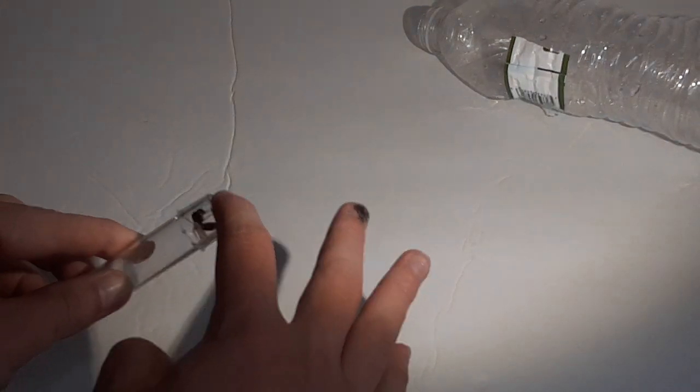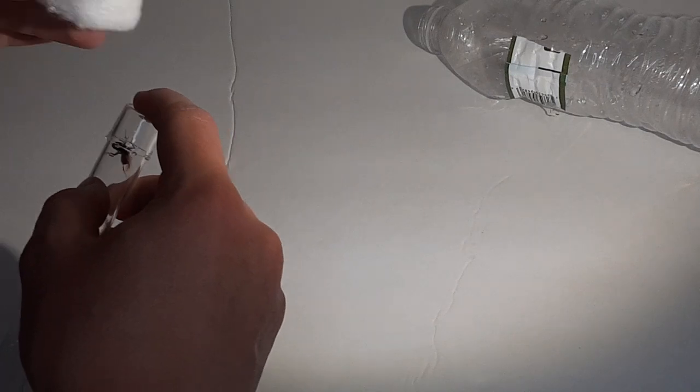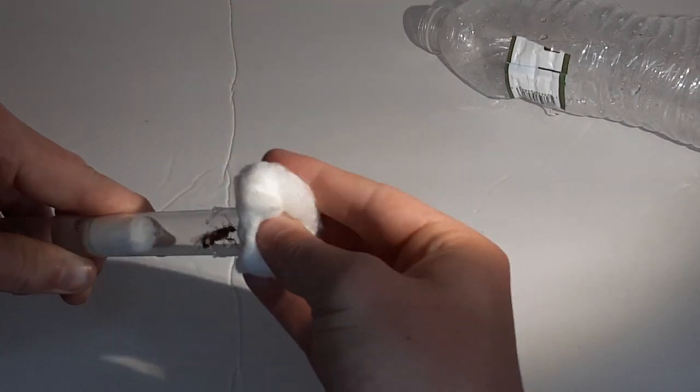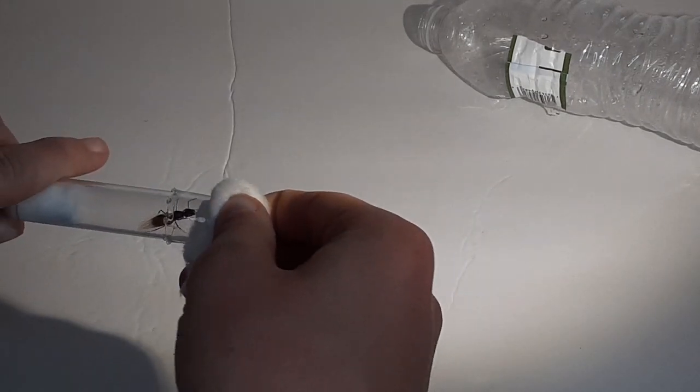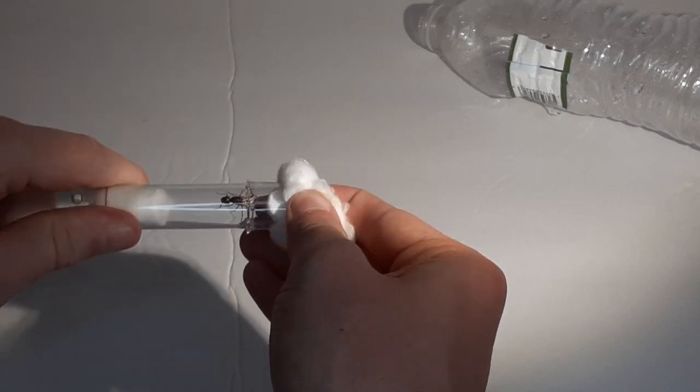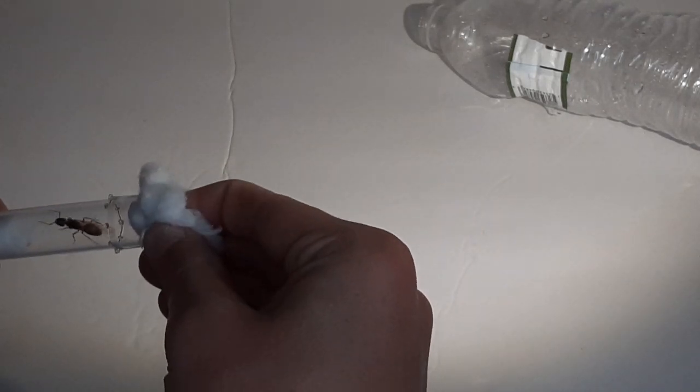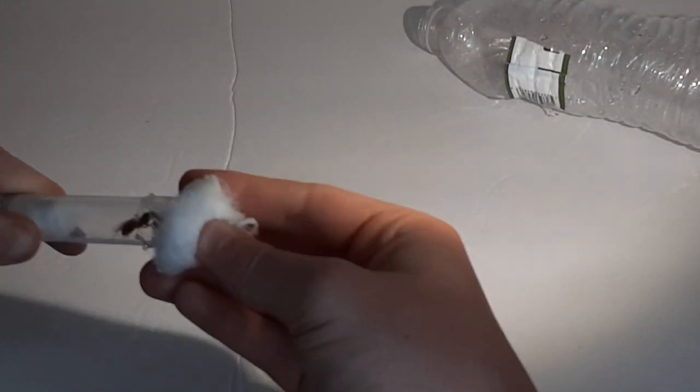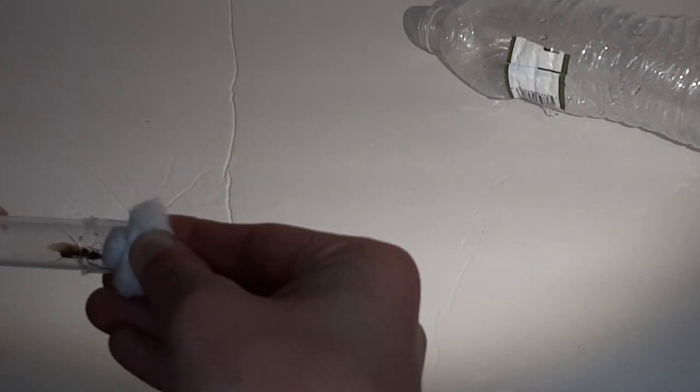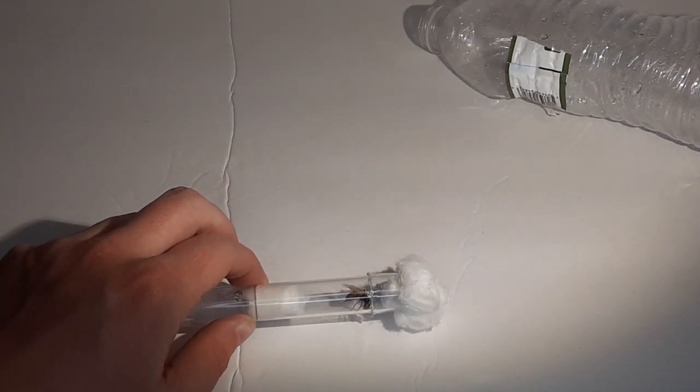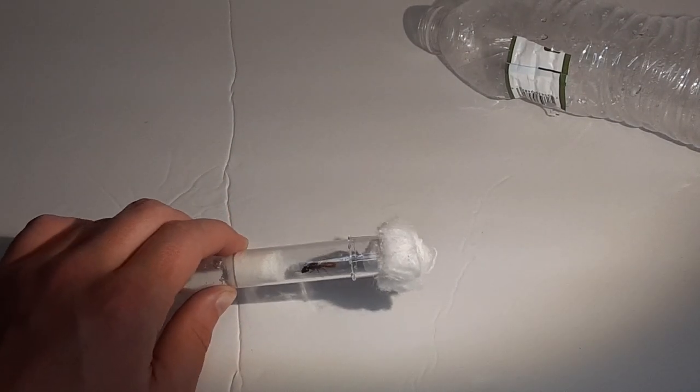There we go, like that. You're going to get another piece of cotton and block the end like that. Just twist it in, get it a little firm in there like so. Then you should have a completed claustral cell that you've just made for your new queen. Most of you guys probably already know how to make these things, but just in case you don't, I thought I'd make a video about it.